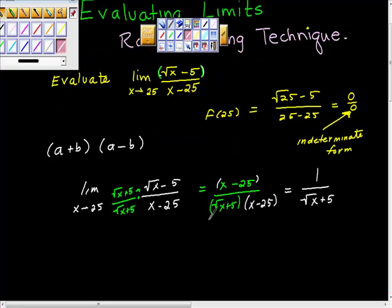So you're saying, well why the hell do we do all this? Well remember, we were looking for this limit, weren't we? But look what happens now if we do direct substitution. If we just evaluate, now what's f of 25? f of 25 is now equal to 1 over square root of 25 plus 5, which is equal to 1 tenth.